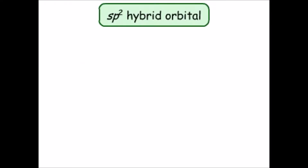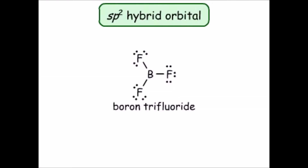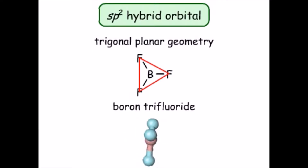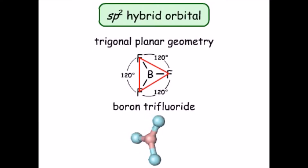The SP2 hybrid orbital is a combination of one S and two P orbitals. An example of a molecule with SP2 hybridization is boron trifluoride, which has trigonal planar geometry. The three fluorine atoms form a triangular shape with the boron atom at the center, and the boron atom has three orbitals oriented outwards at 120 degrees to each other.